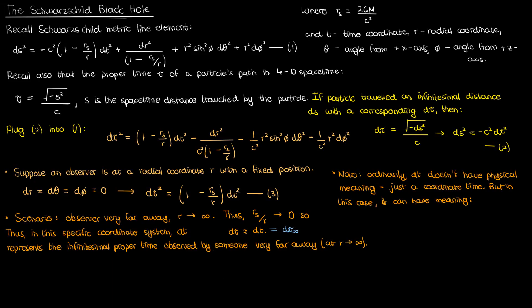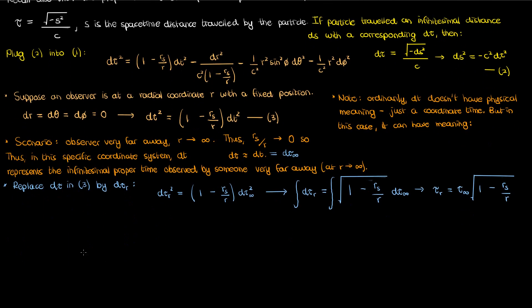I'm going to label the proper time measured at infinity as tau sub infinity. I'll then replace the d tau by d tau sub r in equation 3 to represent the proper time measured at a radial coordinate r. If I then make these substitutions into equation 3, this is what I'll get. I'll take the square root of both sides to get this, and then I'll integrate both sides. When I perform the integration and then get rid of my integration constant, here's what I'll get. And then if I isolate my tau infinity, I'll get tau sub r over the square root of 1 minus rs over r.